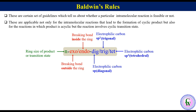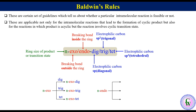Keeping N constant, intramolecular reactions involving exo-bond breaking are of three types depending upon whether the electrophilic carbon is diagonal, trigonal, or tetrahedral: N-exodig, N-exotrig, and N-exotet. Similarly, intramolecular reactions involving endo-bond breaking are of three types: N-endodig, N-endotrig, and N-endotet. Let's have a general representation of these six reactions.